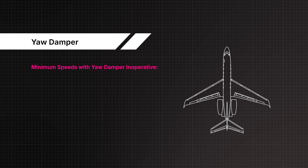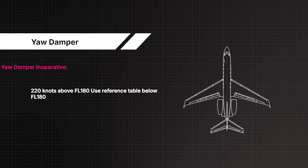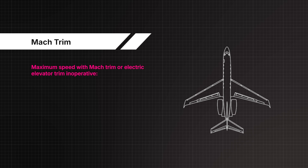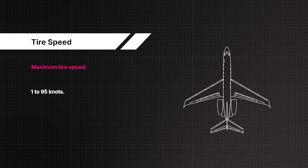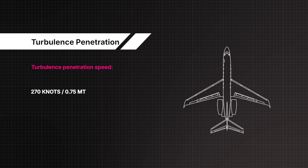Minimum speeds with yaw damper inoperative: 220 knots above flight level 180. Maximum speed with MAC trim or electric elevator trim inoperative: 0.75 MAC. Maximum tyre speed: 195 knots. Turbulence penetration speed: 270 knots or 0.75 MAC.